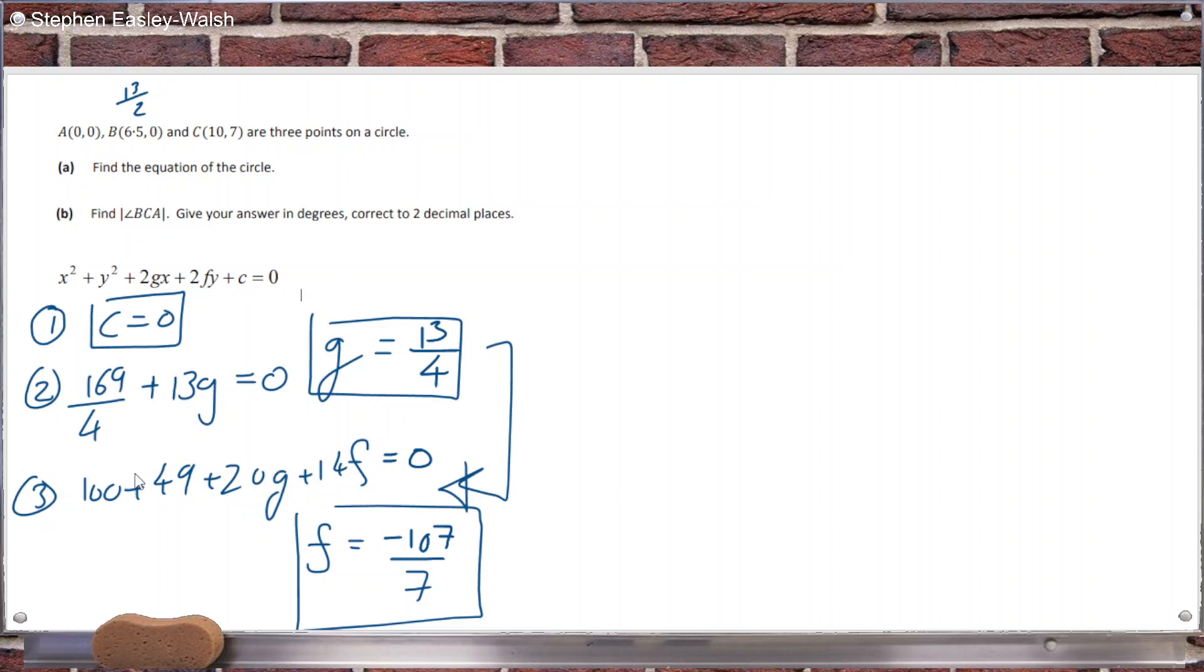10 squared plus 7 squared plus 20G plus 14F plus C equals 0. And is this one right? 13 squared plus 9 plus Y squared is 0 plus 13G. So I got G is 13 over 4. Let me double check that.